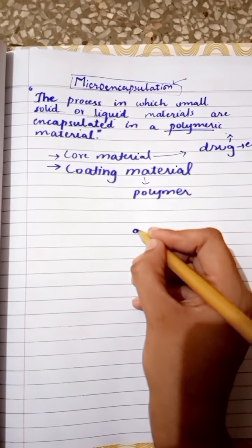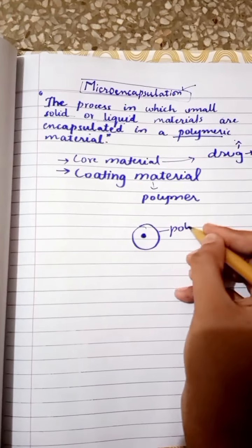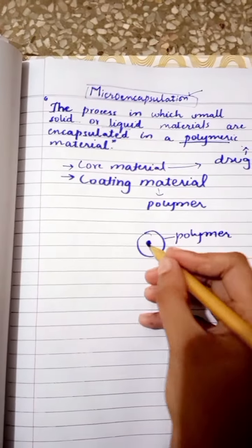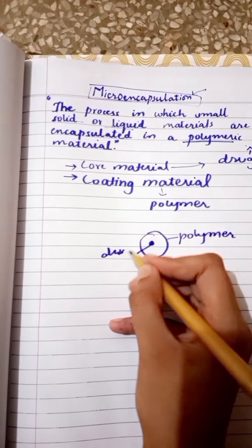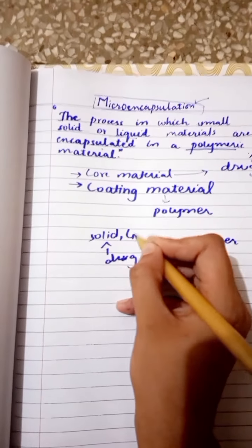Like we can say it is the drug and the other layer is of the coating material which is a polymer and it is outside the drug, coating the drug. This is the drug and it can be solid or liquid drug.